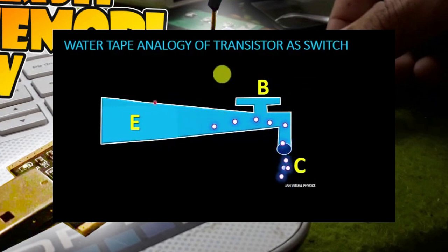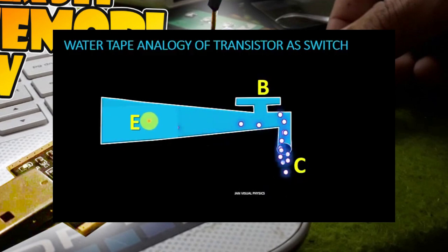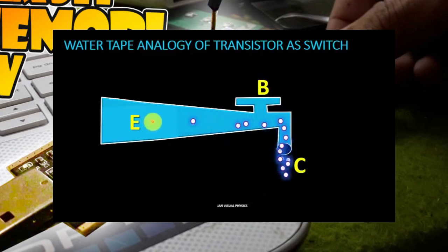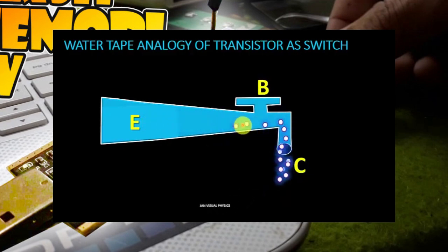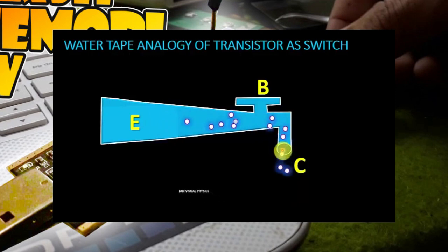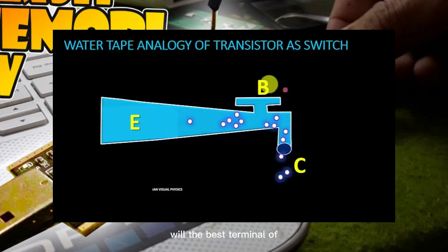A transistor works in a similar way. Current passing through a transistor enters at the emitter terminal of the transistor and leaves at the collector terminal of the transistor.